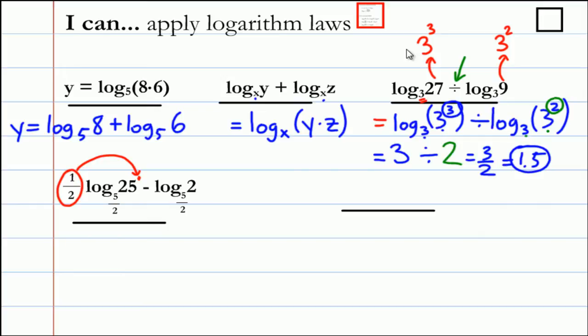So we have log base 5 over 2, 25 to the one half, minus log base 5 over 2 of 2. Now we can apply the quotient law since these two terms are separated by a negative sign.